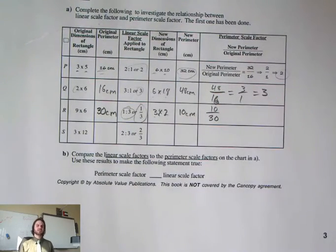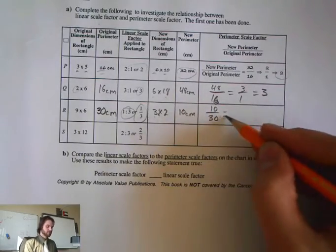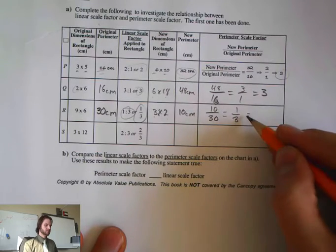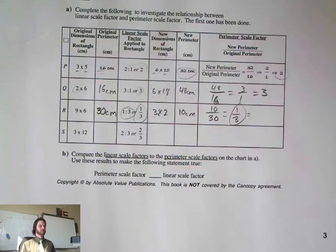So this is 10 over 30. Remember, we don't have to use the units because these are ratios. We take a look at this, this is 1 over 3, and that can't be simplified anymore.